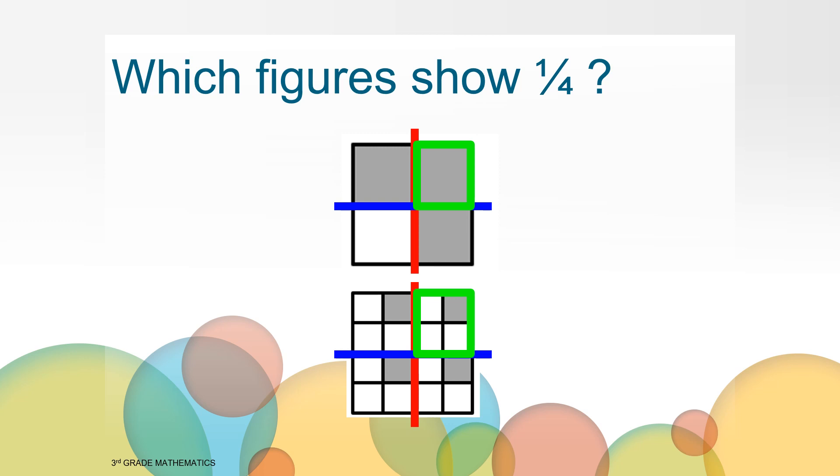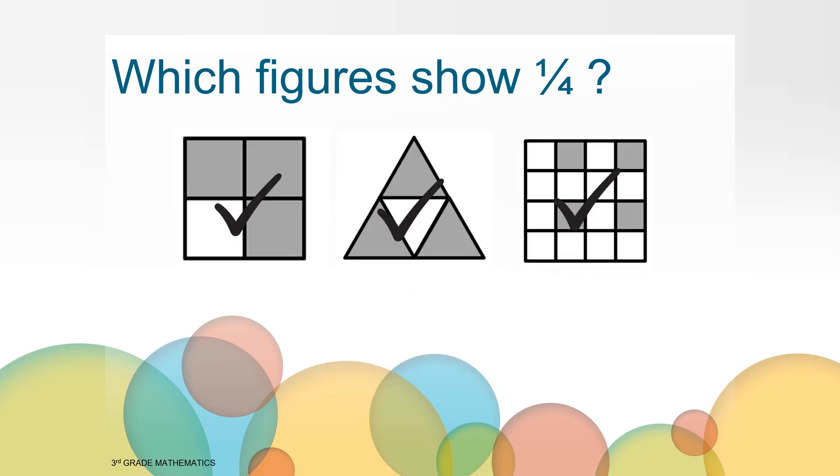If we move the four shaded sixteenths into the one fourth square, we can see that 4/16ths is equal to one fourth. 4/16ths and one fourth are equivalent fractions. Say that word with me now: equivalent fractions. So now we can see how all three of these figures show one fourth.